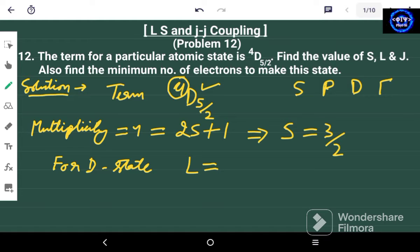And the values of capital L are 0, then 1, then 2, then 3. So we see it is a D state. So the value of L will be 2. So value of capital L is equal to 2.